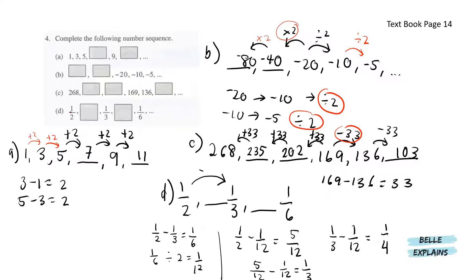Lastly for D, we have 1 over 2, blank, 1 over 3, blank, and 1 over 6. In between 1 over 2 and 1 over 3, there is a difference of 1 over 6. However, since there is a number in between, we cannot just write 1 over 6 here. We'll have to divide that by 2, so we get 1 over 12. The pattern is minus 1 over 12. So 1 over 2 minus 1 over 12 gives us 5 over 12, then minus 1 over 12 gives us 1 over 3, then minus 1 over 12.